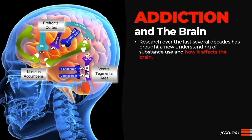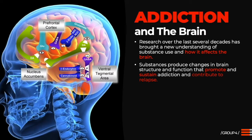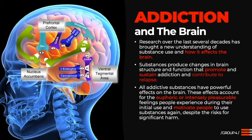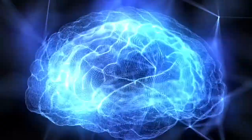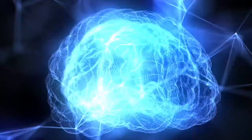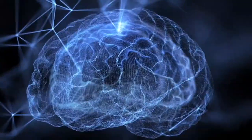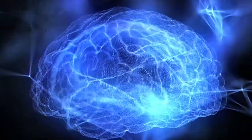Research has brought a new understanding of substance use over the last several decades and how it affects the brain. Substances produce changes in the brain structure and function that promote and sustain addiction and contribute to relapse. All addictive substances have potent effects on the brain. These effects account for the euphoric or intensely pleasurable feelings people experience during their initial use and motivate people to use those substances again, despite the risk of significant harm.